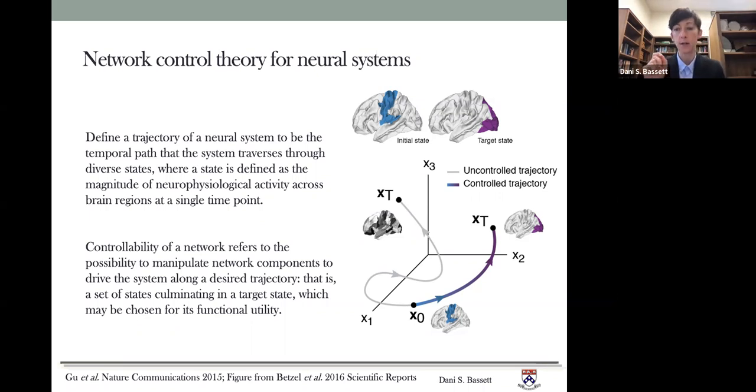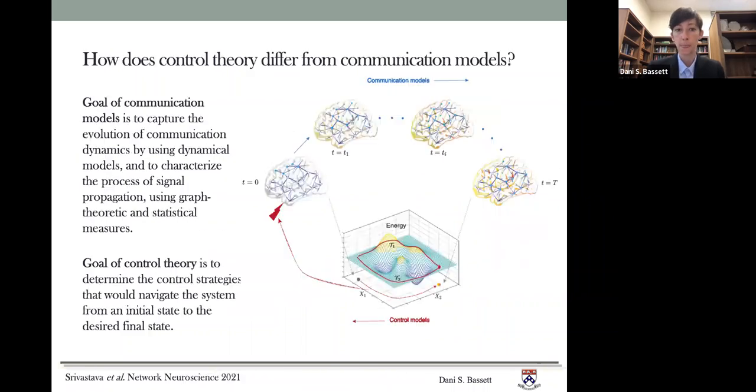Then once that is set up, the controllability of the network refers to the possibility to manipulate network components to drive the system along a desired trajectory. That is a set of states that culminate in a target state, which is often chosen for its functional utility, either in terms of task performance or in terms of healthy dynamics.